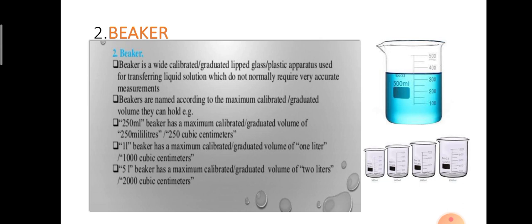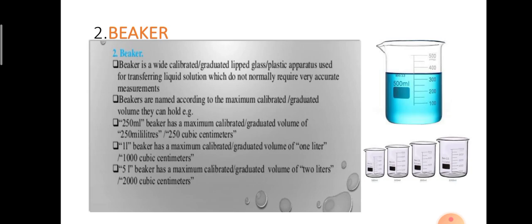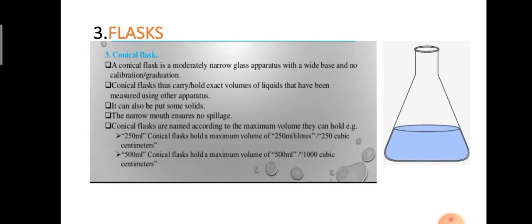So we now know about the test tube and the beaker. Next, moving on to the conical flasks. The conical flasks are divided into conical flask, round bottom flask and flat bottom flask.